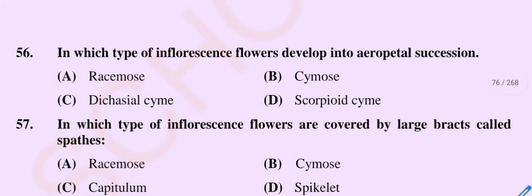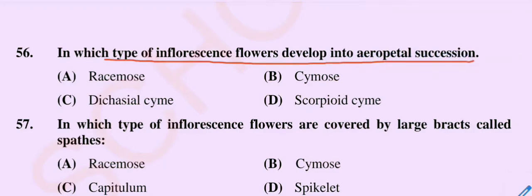Question number 56: In which type of inflorescence do flowers develop in acropetal succession? Option A racemose, option B cymose, option C dichasial cyme, option D scorpioid cyme. The correct option is option A, racemose.